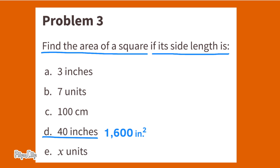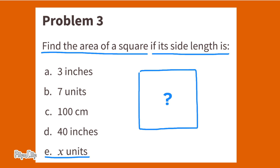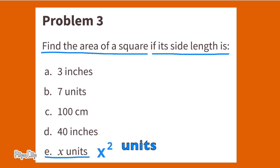Find the area of a square if its side length is X units. X times X equals X squared. The area of this square would be X square units, or X units squared.